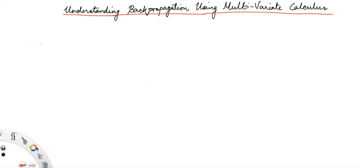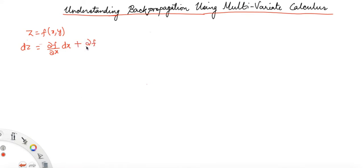Let's say z is a function of x and y. The elementary change in z, dz, is equal to the partial derivative of f with respect to x times dx, the elementary change in x, plus the partial derivative of f with respect to y times the elementary change in y. This equation we have already proved in one of the videos on directional derivatives.